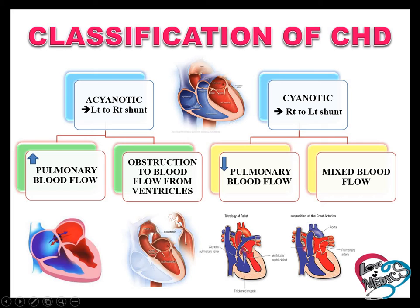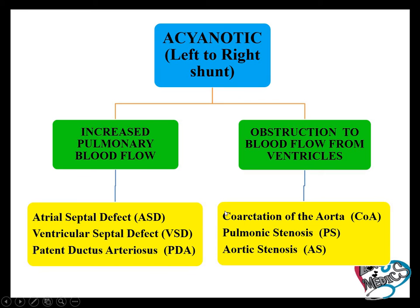In cyanotic heart disease, blood passes from the right side to the left side. The deoxygenated blood from the right side is distributed all over the body. Cyanotic heart disease is divided into decreased pulmonary blood flow and mixed blood flow. Decreased pulmonary blood flow occurs when obstruction in the blood vessel reduces pulmonary flow.